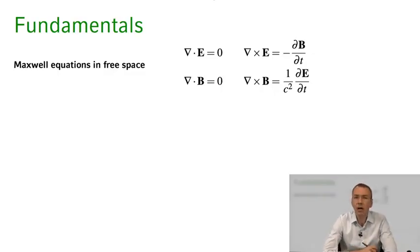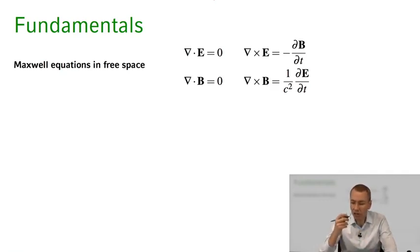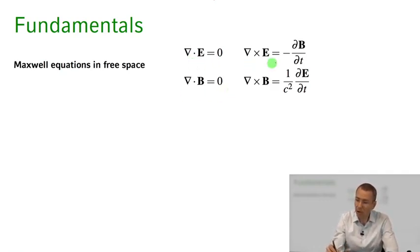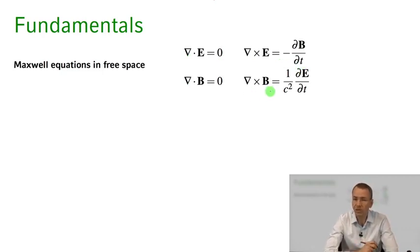Our starting point are Maxwell's equations in free space without any charges or currents in the system. So we just have divergence of E equals zero, divergence of B equals zero, curl of E equals minus dB/dt, and curl of B equals 1 over c squared dE/dt.